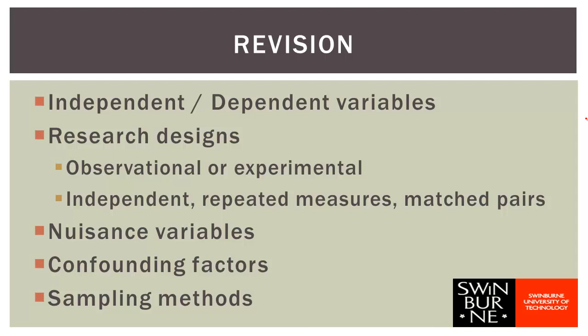Independent samples is where we have two samples collected completely separately, independently of one another. Repeated measures is where we have the same units — quite often the same people — and we take multiple measurements, typically two, such as a before and after. Matched pairs is kind of halfway between the two: we have two different groups but we've intentionally tried to make them as similar as possible, matching them one to one.